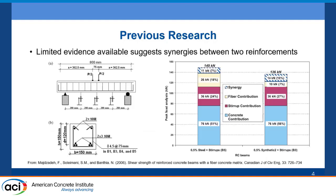Let's look at one specific research topic. This is a set of beams that were tested with both stirrups and fibers in a square matrix. The baseline is a plain concrete beam with no stirrups. They added stirrups to some, fibers to others, and then both stirrups and fibers to complete the matrix. This bar graph shows what each addition contributes to shear strength: the bottom blue is concrete, the red is stirrup contributions, yellow is fiber contributions, and at the top there's a synergy component — beams with both fibers and stirrups had extra strength compared to those with just fibers or just stirrups.